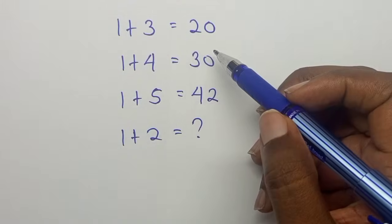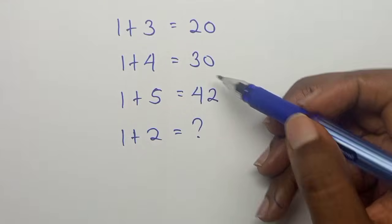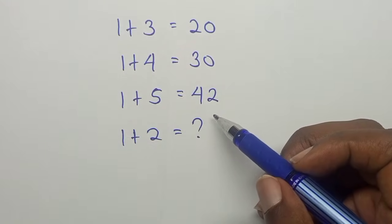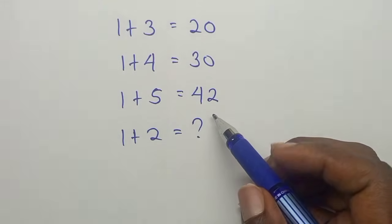1 plus 3 equals 20. 1 plus 4 equals 30. 1 plus 5 equals 42. So what is 1 plus 2 equals to in this sequence here?